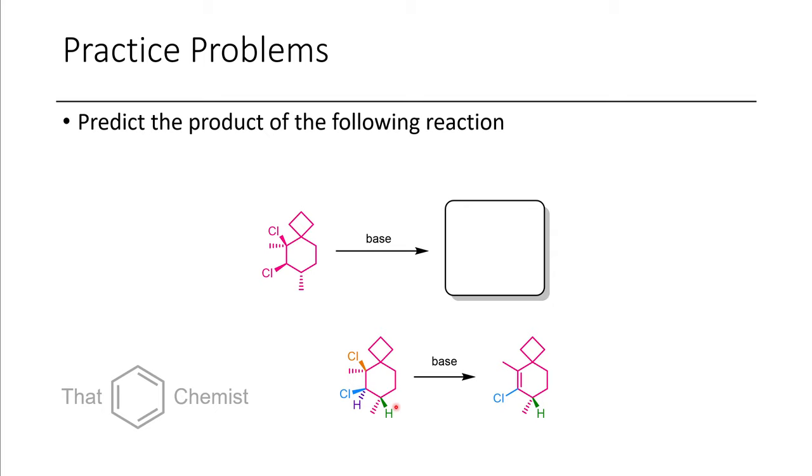And as was highlighted last lecture, if you want to do an E2 elimination, you have to have an anticoplanar relationship between the hydrogen and the leaving group. And so the only proton that would be deprotonated eliminating a chloride would be the purple hydrogen and this orange chloride. And so we'd get the alkene in that position shown here. And so this is a useful way to have multiple halides and get selective elimination of one while the other remains intact.